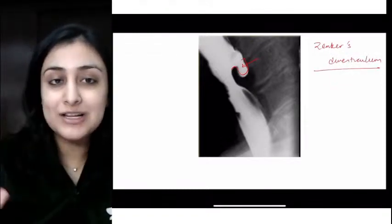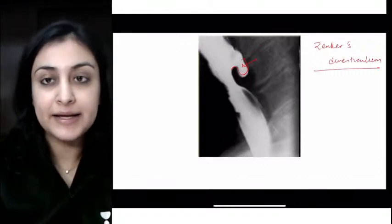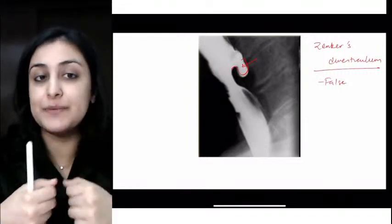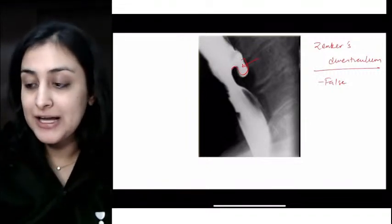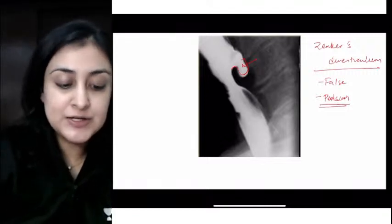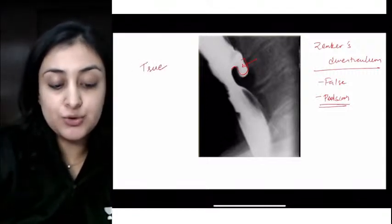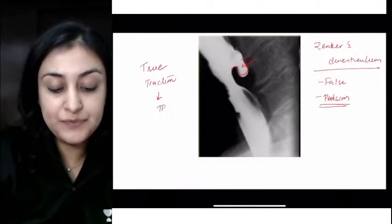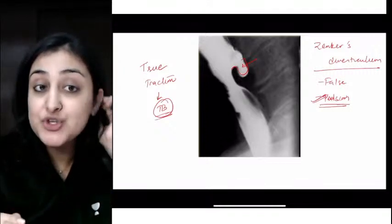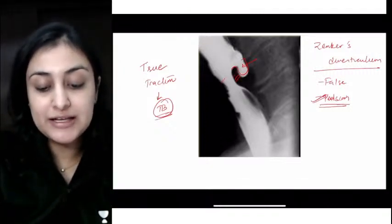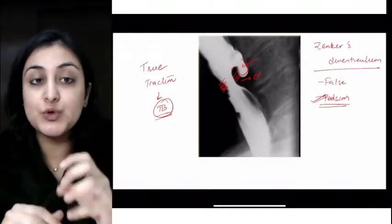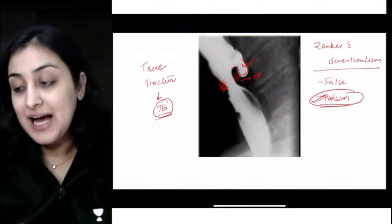Is Zenker's diverticulum a true or false diverticulum? It's just the mucosa herniating, so it's a false diverticulum. Is it a pulsion or traction diverticulum - where something is pulling or pushing? This is a pulsion diverticulum. Remember all T's stick together: a true diverticulum is a traction diverticulum seen with tuberculosis in the mid esophagus. This is a pulsion diverticulum where neuromuscular incoordination is pushing it out - narrowing at the cricopharyngeus, between the thyropharyngeus and cricopharyngeus.